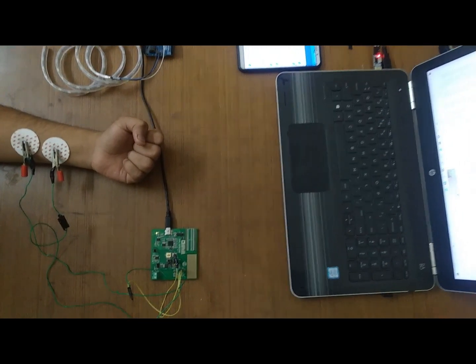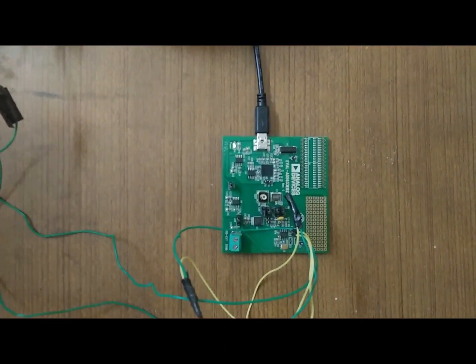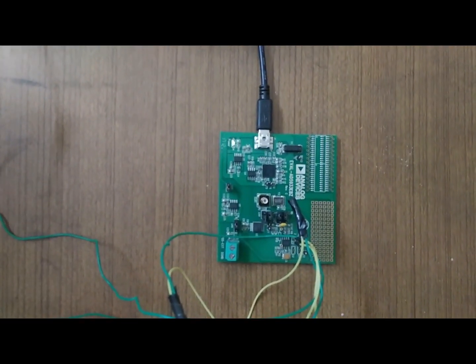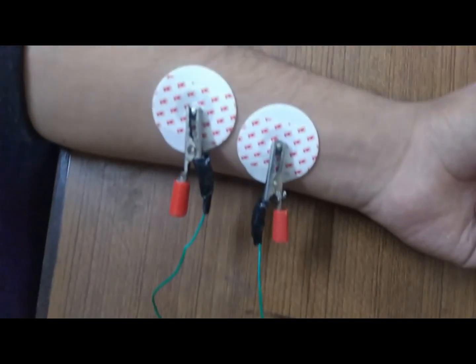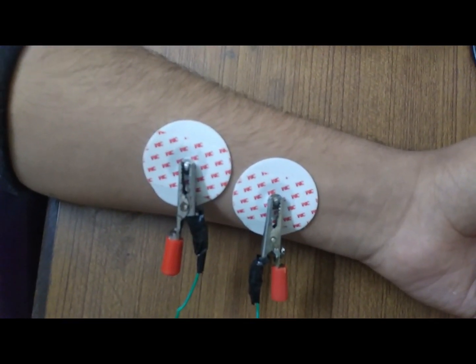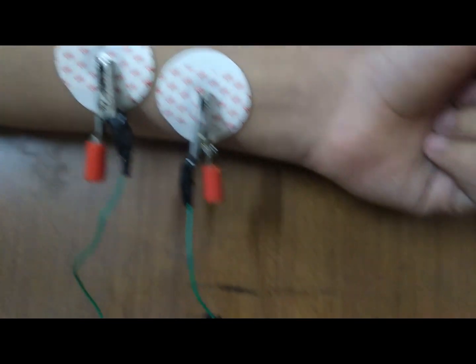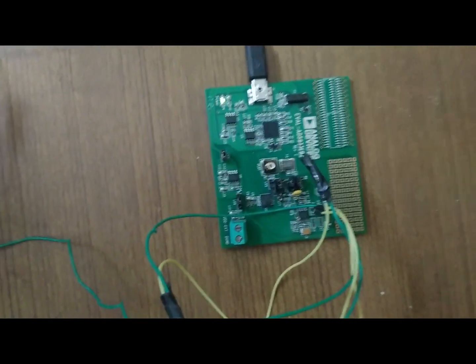Coming to the hardware part. This is AD5933 impedance analyzer. The excitation signal from the impedance analyzer is given to the left electrode pad. The response signal from the right electrode pad is given back to the impedance analyzer. The values of the analyzer can be seen on screen as a graph.